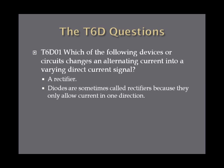Which of the following devices or circuits changes an alternating current into a varying direct current signal? A rectifier does this. What you're looking for here is turning an alternating current — a current which goes back and forth in two different directions — into a varying direct current, which means current that goes only in one direction. That's a rectifier.